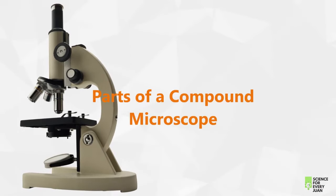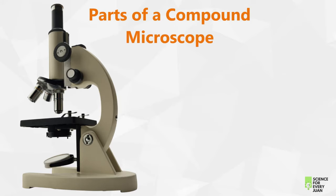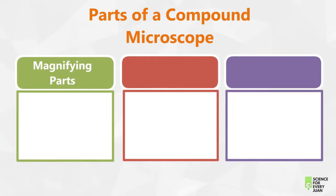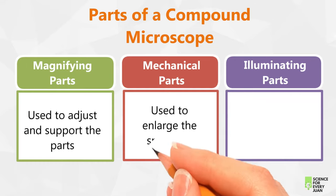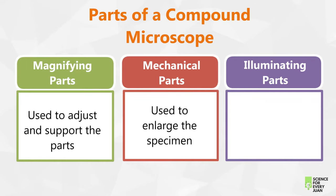Now let us identify the different parts of a compound microscope. The parts of the microscope can be divided into three: the magnifying parts, mechanical parts, and illuminating parts. The magnifying parts are used to adjust and support the parts of the microscope. Mechanical parts are used to enlarge the specimen, and illuminating parts are used to provide light.